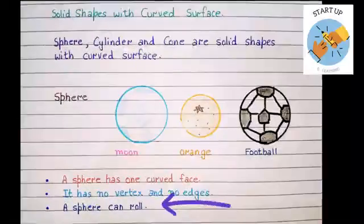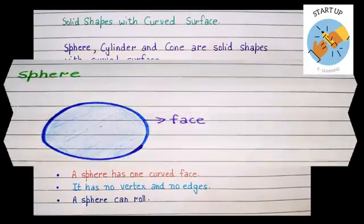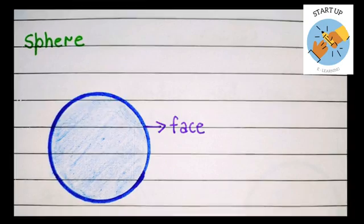A sphere can easily roll. As you all can roll the ball, an orange, a lemon like that. In this picture you can see the face of a sphere. It has only one face. A sphere does not have any edge or vertex.